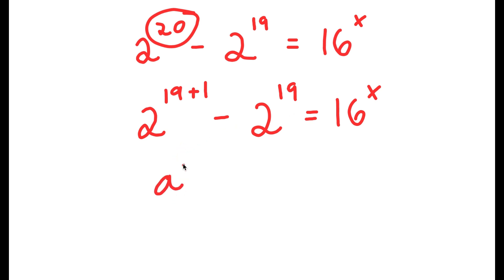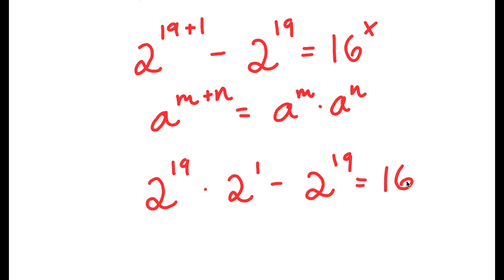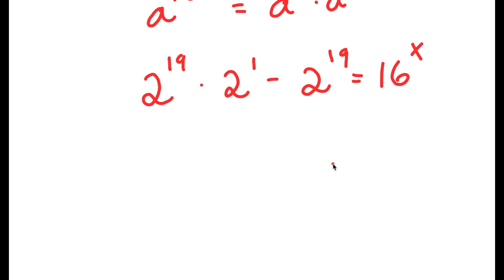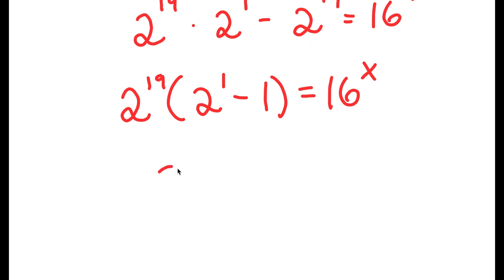If I have something in the form a to the power of m plus n, this equals a to the power of m times a to the power of n. So 2 to the power of 19 plus 1 equals 2 to the power of 19 times 2 to the power of 1. Now if I factor out 2 to the power of 19 from the left-hand side, I get 2 to the power of 19 times the quantity 2 to the power of 1 minus 1, which equals 1. So I have 2 to the power of 19 is equal to 16 to the power of x.